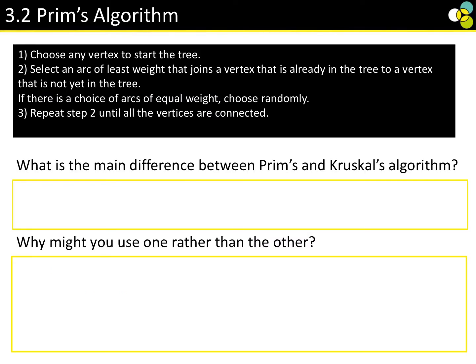Now we have Prim's algorithm. It's slightly different because we have a slightly different set of rules. The main difference between Prim's and Kruskal's is that Prim's looks at the vertices, or nodes, whereas Kruskal's looks at the arcs — or, as we like to call them, edges. We might use one more than another, and we're going to come to why in a minute when we actually have a go at it.